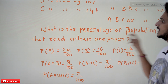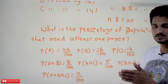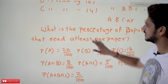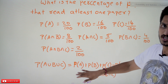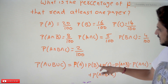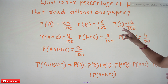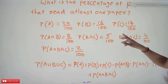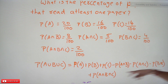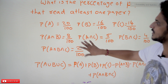We need to find the percentage of the population that reads at least one newspaper. 'At least one' means A or B or C. We use the inclusion-exclusion formula: P(A ∪ B ∪ C) = P(A) + P(B) + P(C) − P(A ∩ B) − P(A ∩ C) − P(B ∩ C) + P(A ∩ B ∩ C). This was discussed in our previous classes using Venn diagrams.